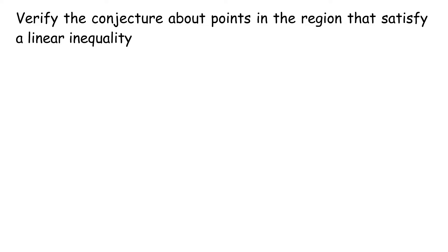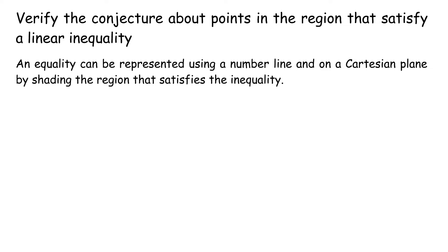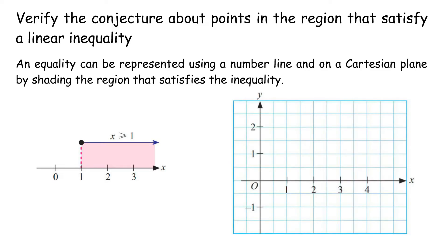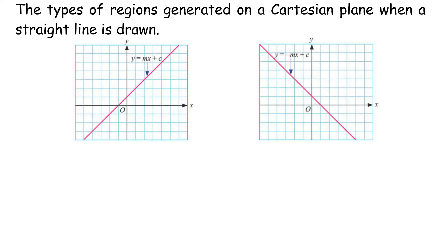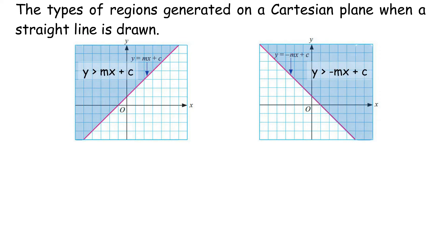Verify the conjecture about points in the region that satisfy a linear inequality. An inequality can be represented on a Cartesian plane by shading the region that satisfies the inequality. For instance, X greater than or equal to 1. The types of regions generated on a Cartesian plane when a straight line is drawn: all points on the line satisfy y equals mx plus c; all points in the region above satisfy y greater than mx plus c; all points in the region below satisfy y less than mx plus c.